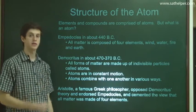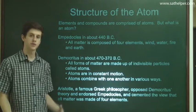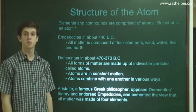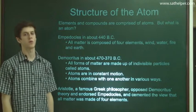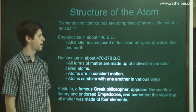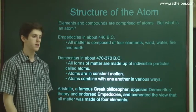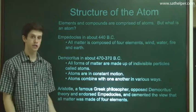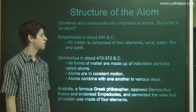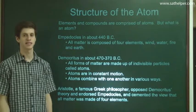An alternative theory was given by Democritus, who lived around 470 to 370 B.C. His idea was a little bit more in line with what we think of today. What he said was that all forms of matter are made up of indivisible particles called atoms. He said that atoms are in constant motion — which, as we know today, they are — and that they combine with one another in various ways. So he kind of hit the nail on the head given his time.